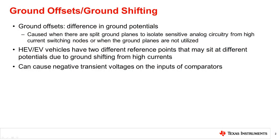In high current automotive electrical systems, a common challenge that occurs is difference in ground potentials, also known as ground offsets. This can be caused when there are split ground planes to isolate sensitive analog circuitry from high current switching nodes, or when the ground planes are not utilized. Hybrid electric and electric vehicles frequently have two different ground reference points that may set different potentials due to ground shifting from high current electrical circuits. This can cause negative transient voltages on the input pins of comparators.